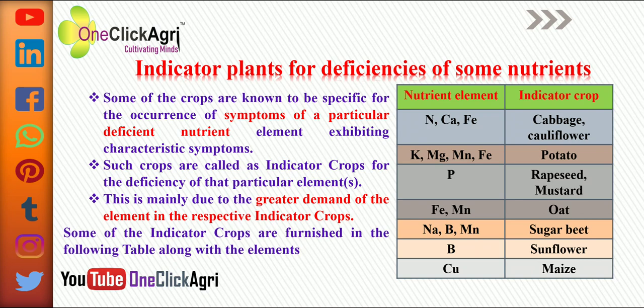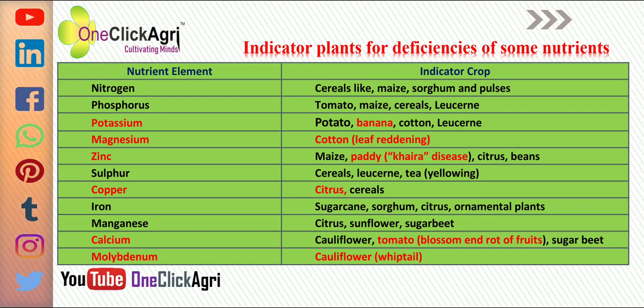Now we have a chart showing plant nutrients along with their respective indicator plants. The briefing of the chart is as follows: for nitrogen, calcium, and iron, the indicator crop or plant is cabbage and cauliflower. For potassium, magnesium, manganese, and iron, the indicator plant is potato. For phosphorus, it is rapeseed and mustard. For iron and manganese, it is oat. For sodium, boron, and manganese, it is sugar beet. For boron alone, it is sunflower. For copper, its respective indicator plants are also listed.